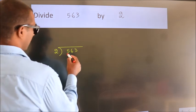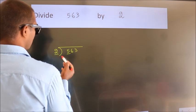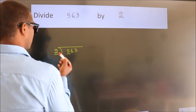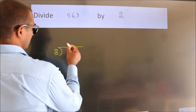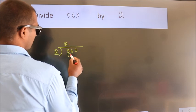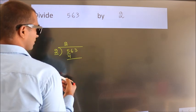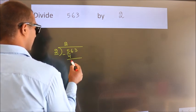Here we have 5, here 2. A number close to 5 in the 2 table is 2 times 2, which is 4. Now we should subtract. We get 1.